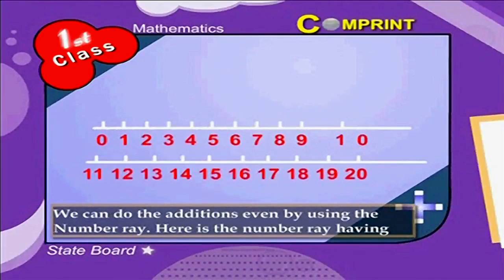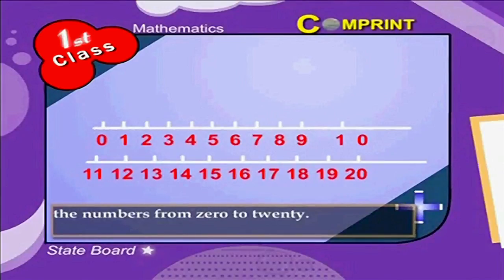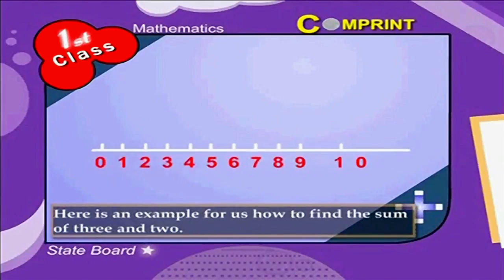We can do the additions even by using the number ray. Look at the picture. Here is the number ray having the numbers from zero to twenty. Here is an example for us how to find the sum of three and two.